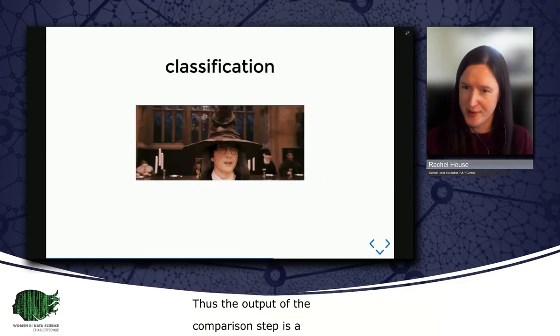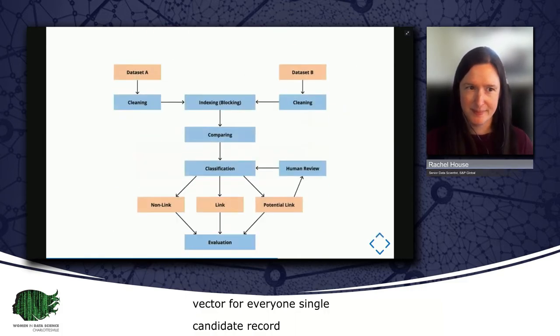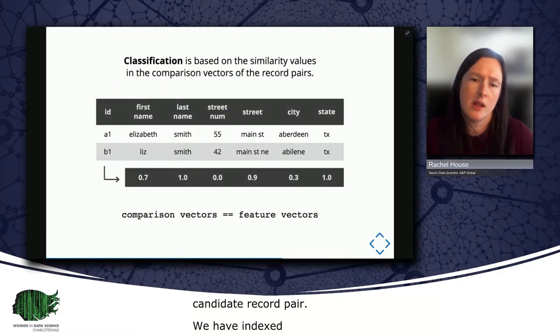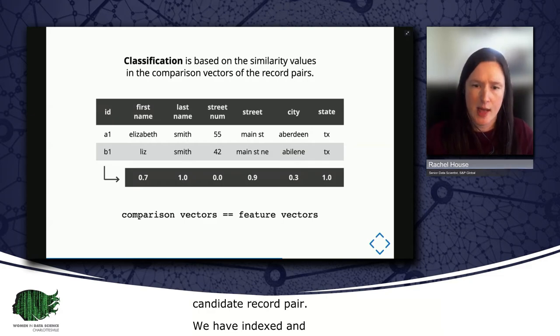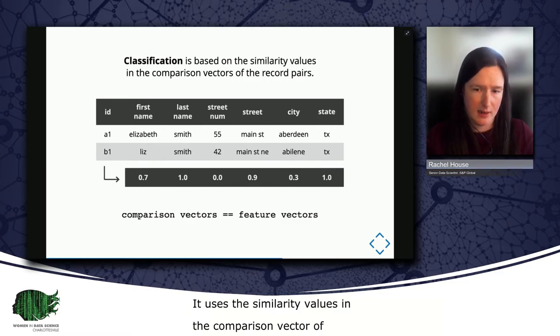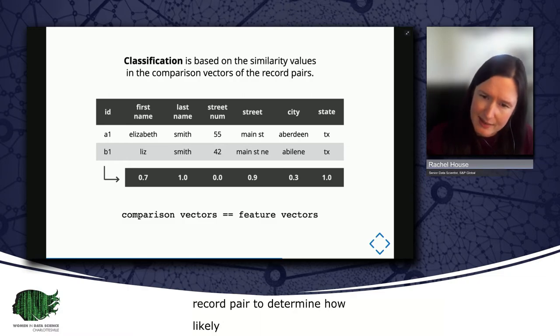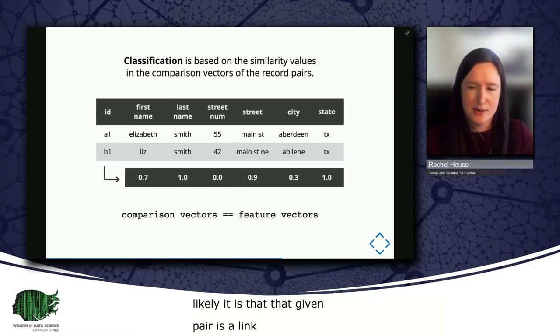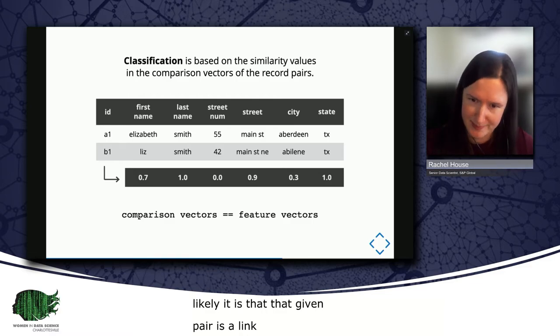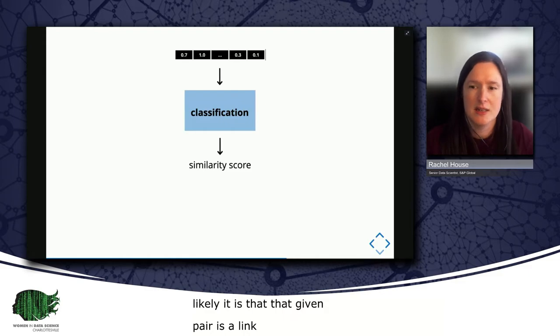We've indexed, we've compared, and now we classify. The classification step of linking uses the similarity values in the comparison vector of the candidate record pair to determine how likely it is that that given pair is a link. And if you were thinking that the comparison vector looks a lot like a feature vector that you might feed to a machine learning model, then you'd be right. They're equivalent.